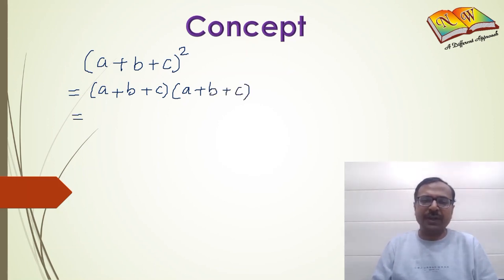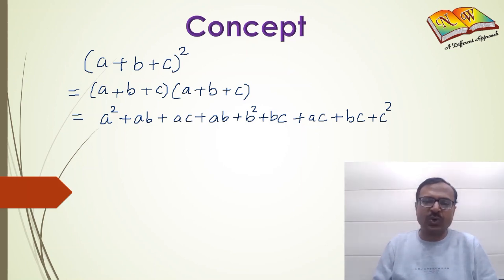When you start multiplying these, you get nine terms: a² plus ab plus ac plus ab plus b² plus bc plus ac plus bc plus c². If you arrange them in order, a² plus b² plus c² are the three terms containing squares.